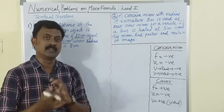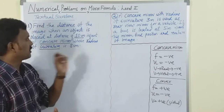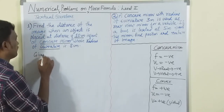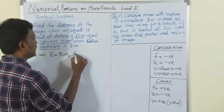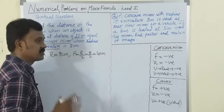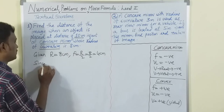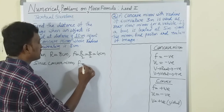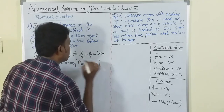First, identify the mirror - it's a concave mirror, so f is negative. The focal length is not directly given; they gave the radius of curvature. So r = 8 cm, therefore f = r/2 = 8/2 = 4 cm. Since it is a concave mirror, f = -4 centimeters.